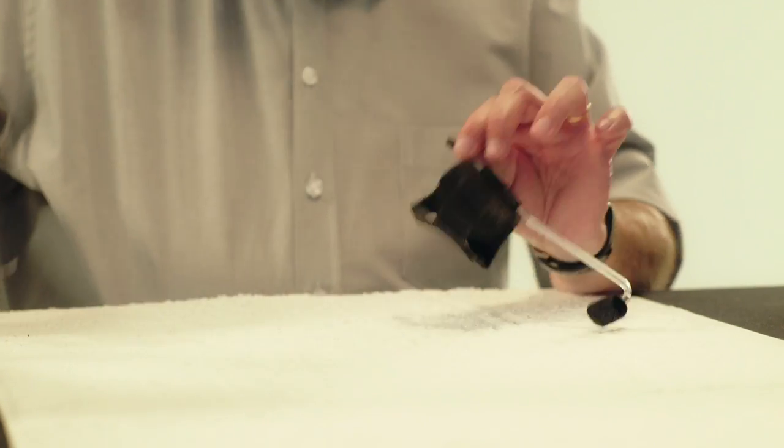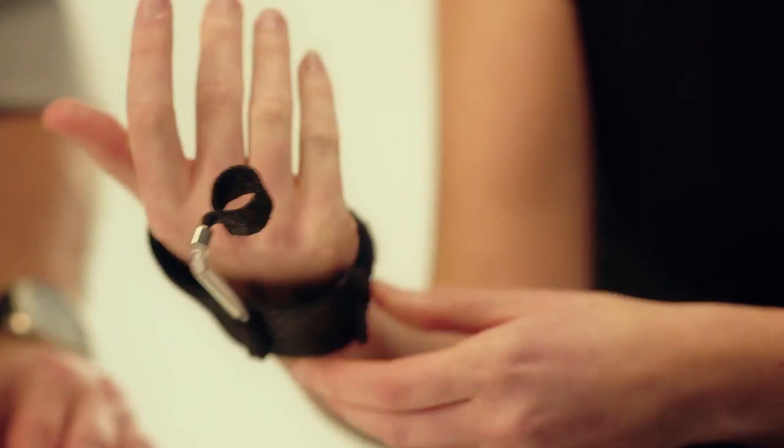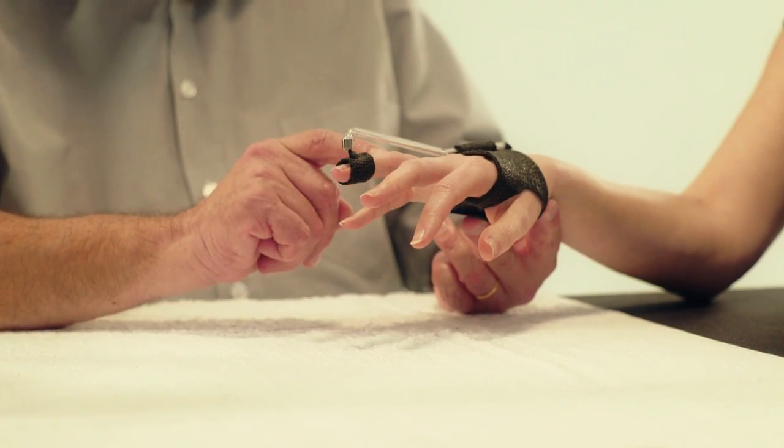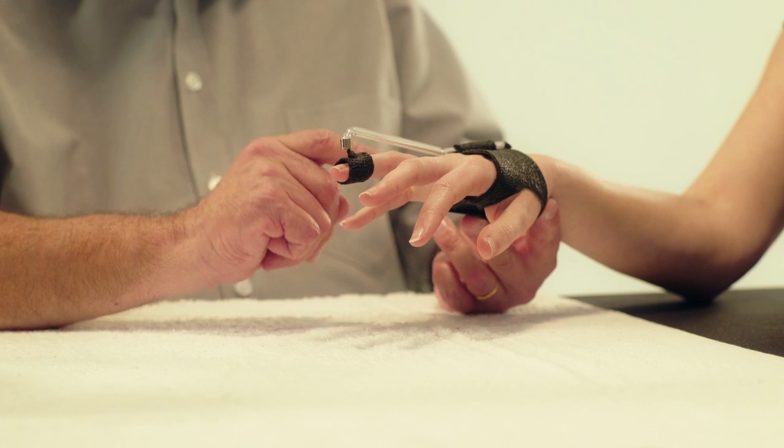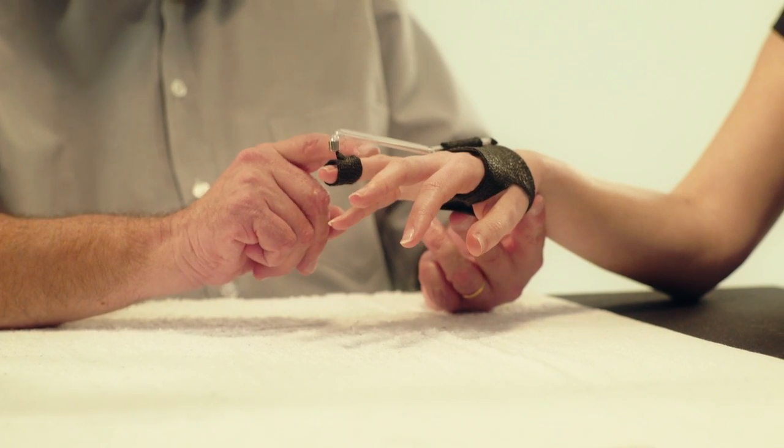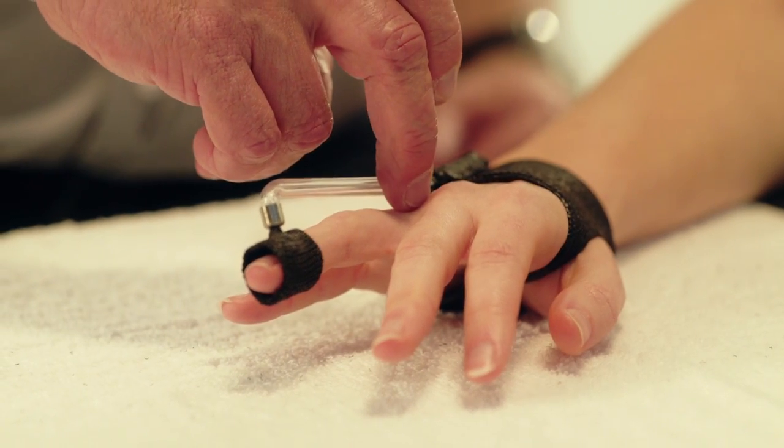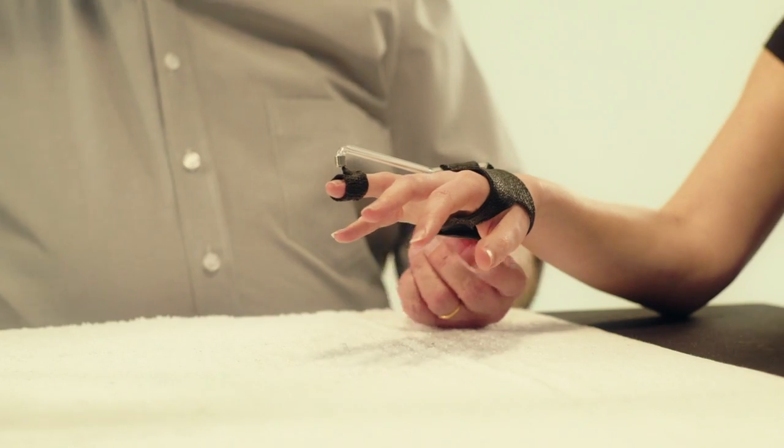The orthosis can be tried on. The finger is clearly pulled in extension. However, a hyperextension of the MCP joint must be avoided. To do this, we have to create an MCP stop.